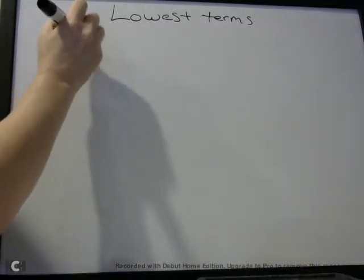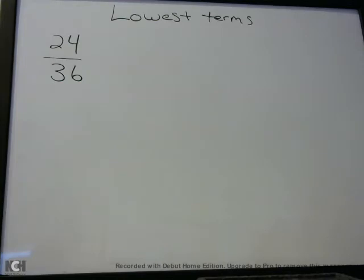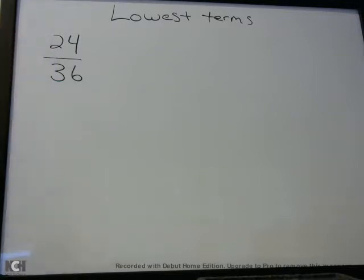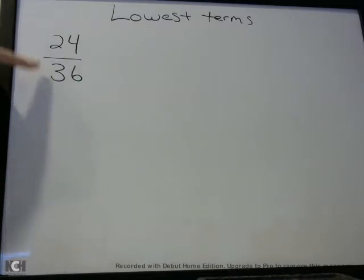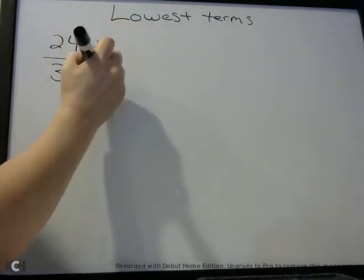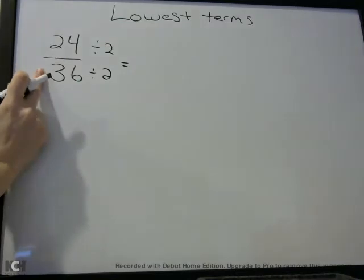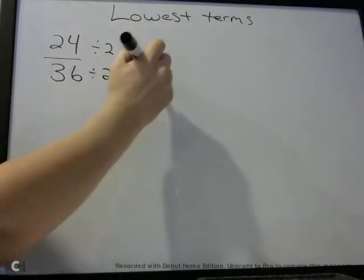If we take a fraction like 24/36, we need to find a number that divides into both 24 and 36 evenly. You'll want to watch the video on divisibility to more readily know what numbers divide evenly into other numbers. You should know that 24 and 36 can both be divided by 2. So dividing both the numerator and denominator by 2: 24 divided by 2 is 12, and 36 divided by 2 is 18.